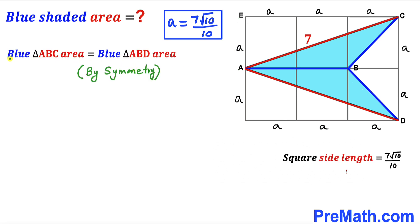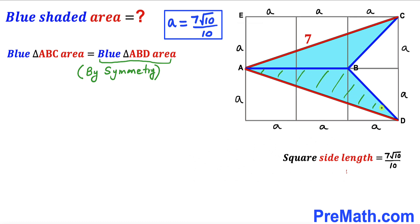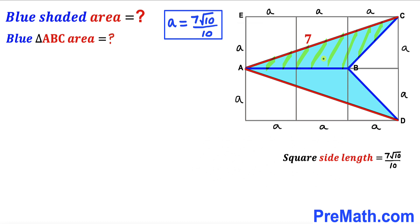Now let's make an observation: the area of blue triangle ABC equals the area of the other blue triangle ABD by the definition of symmetry. In other words, if the area of triangle ABC is uppercase A, then the area of triangle ABD is uppercase A as well.